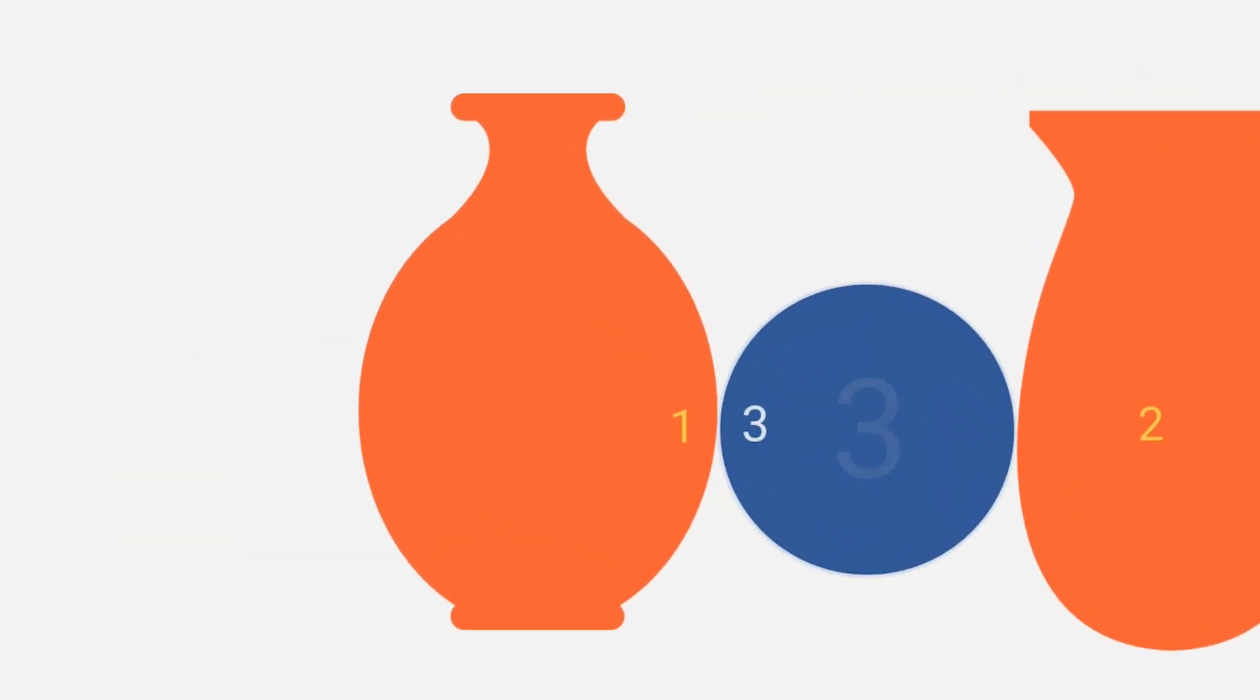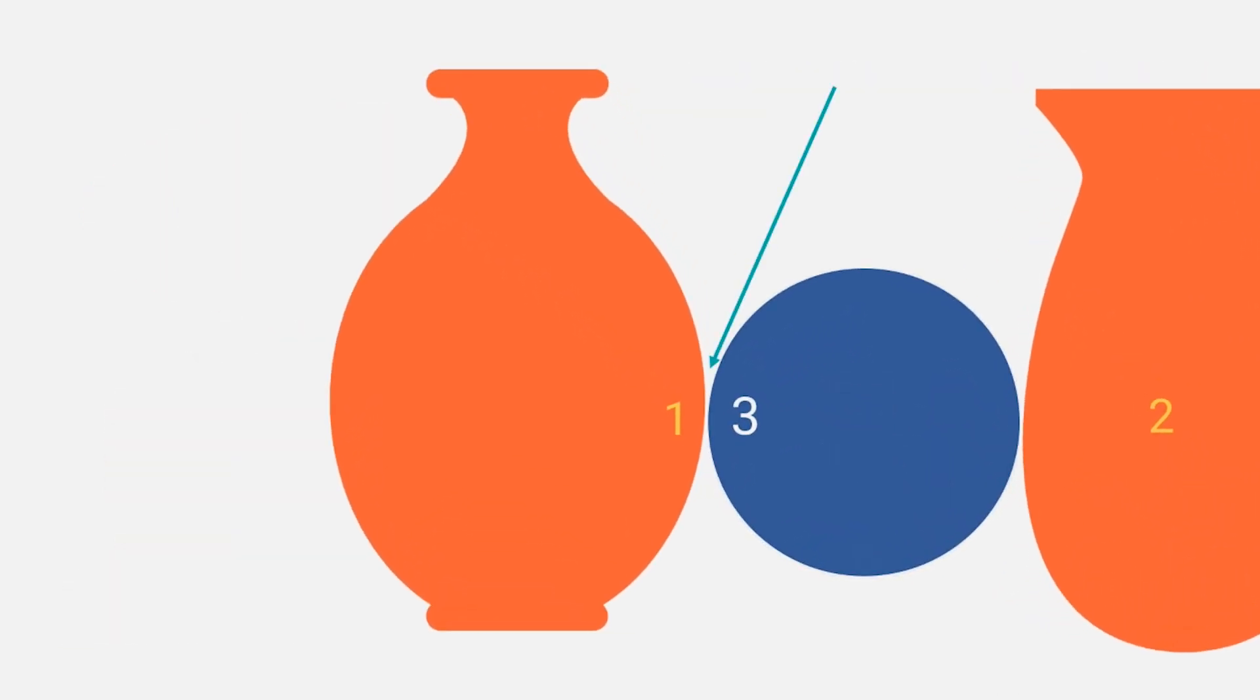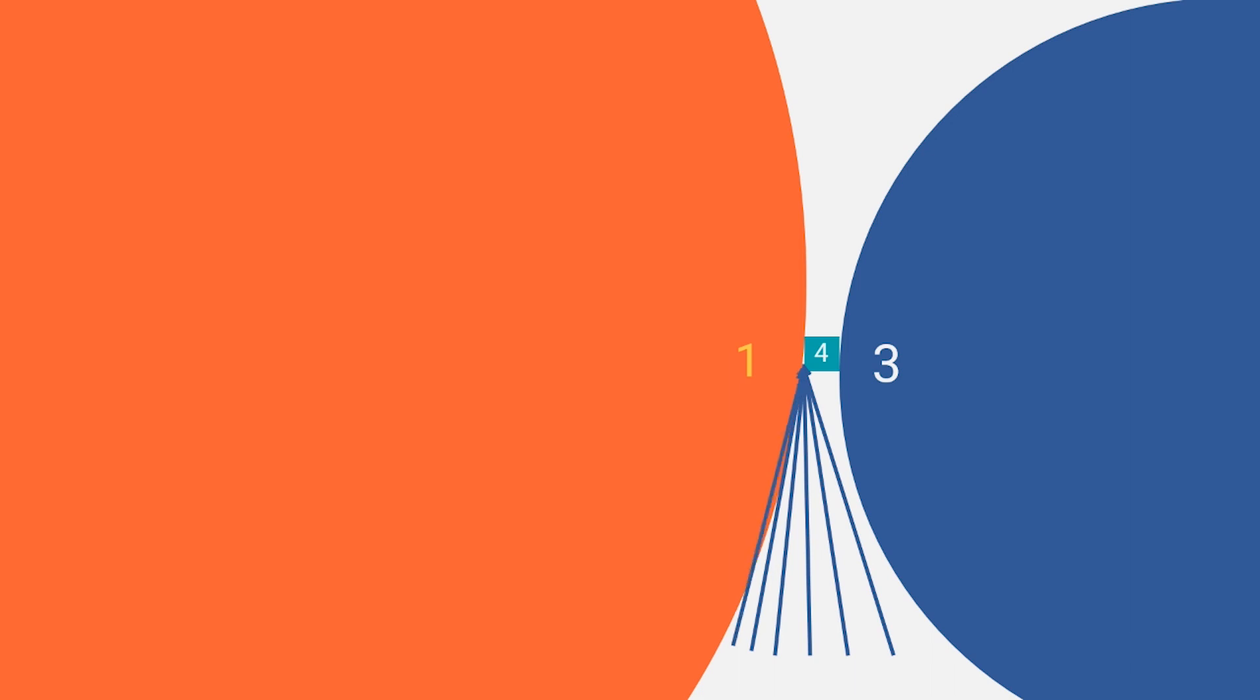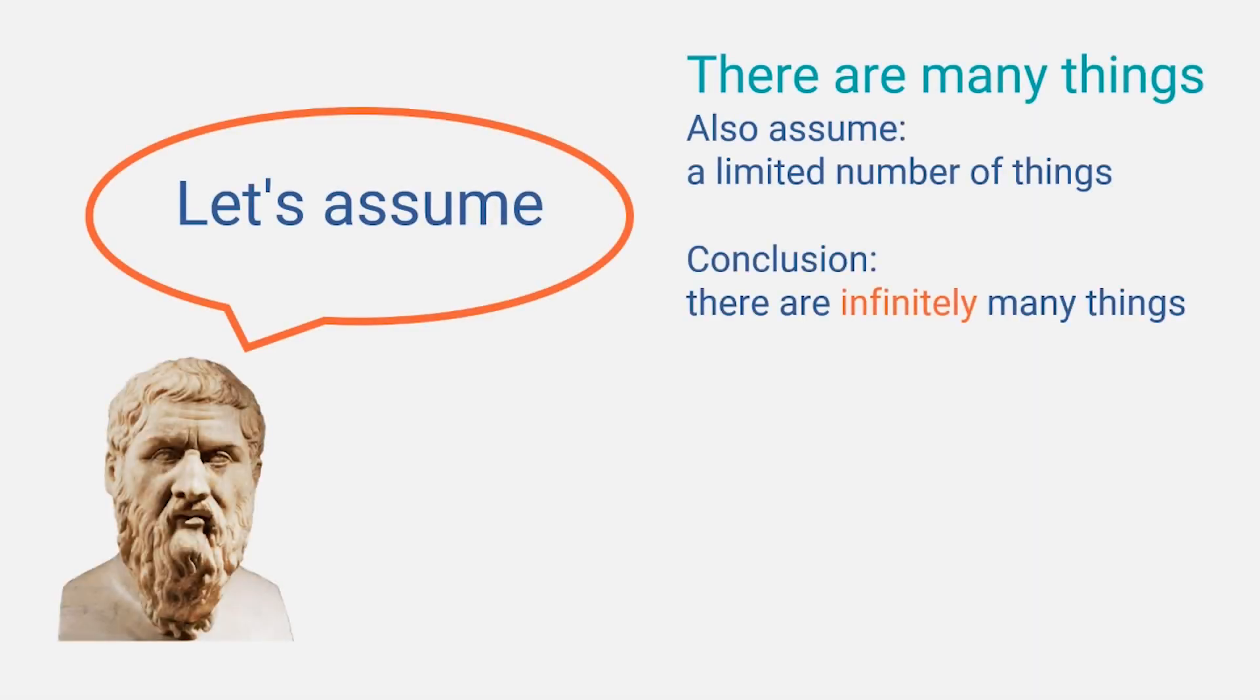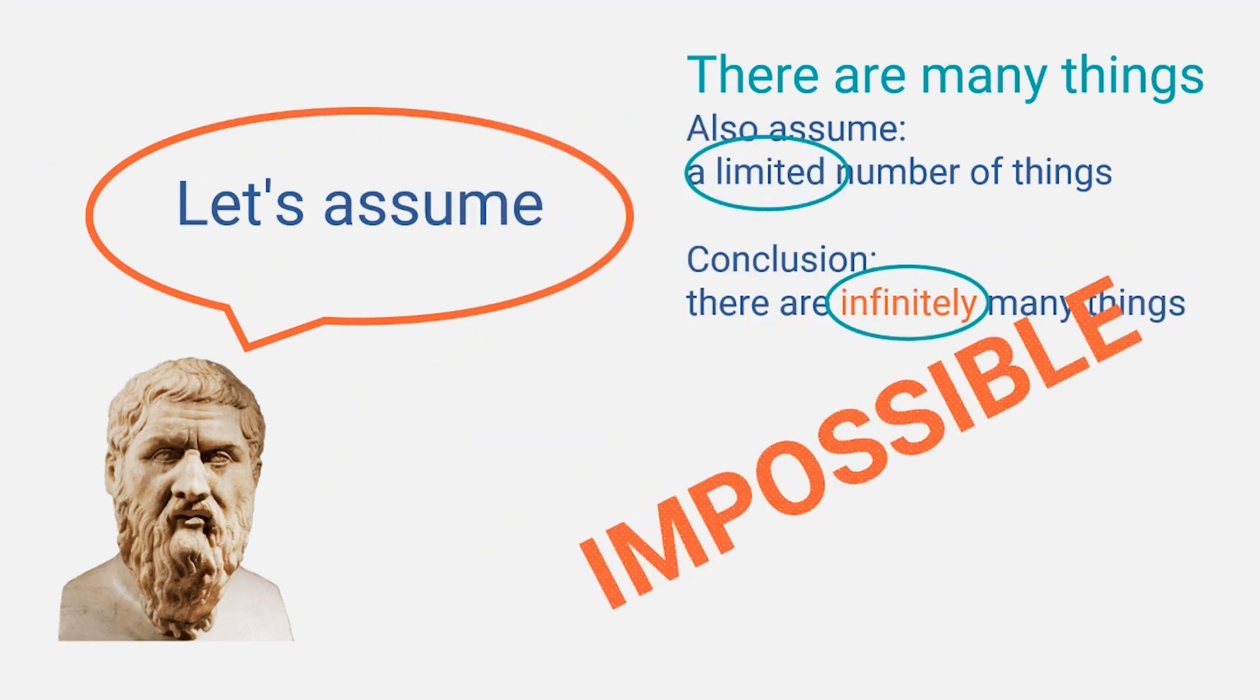But then, what is between one of those things and the third thing that we just identified? Again, it can't be nothing. So it has to be something again. And so on and so forth. And so, if you keep going with this logic, there are infinitely many things. Even though we just decided that there is a limited number of things. That means that there is both a finite and an infinite number of things at the same time. And that is an impossible contradiction. Therefore, there can only be one thing.